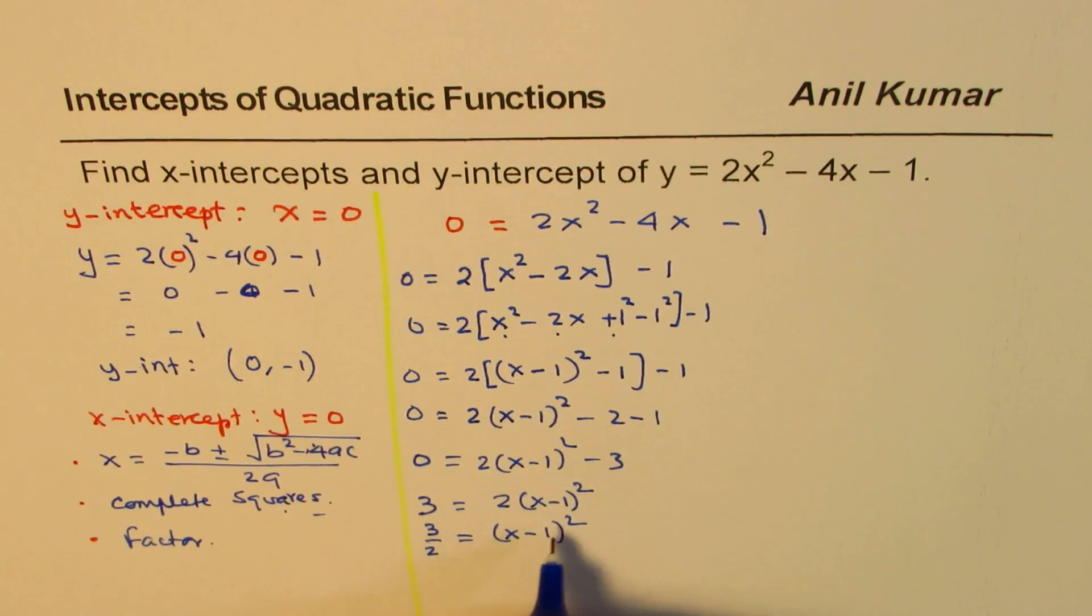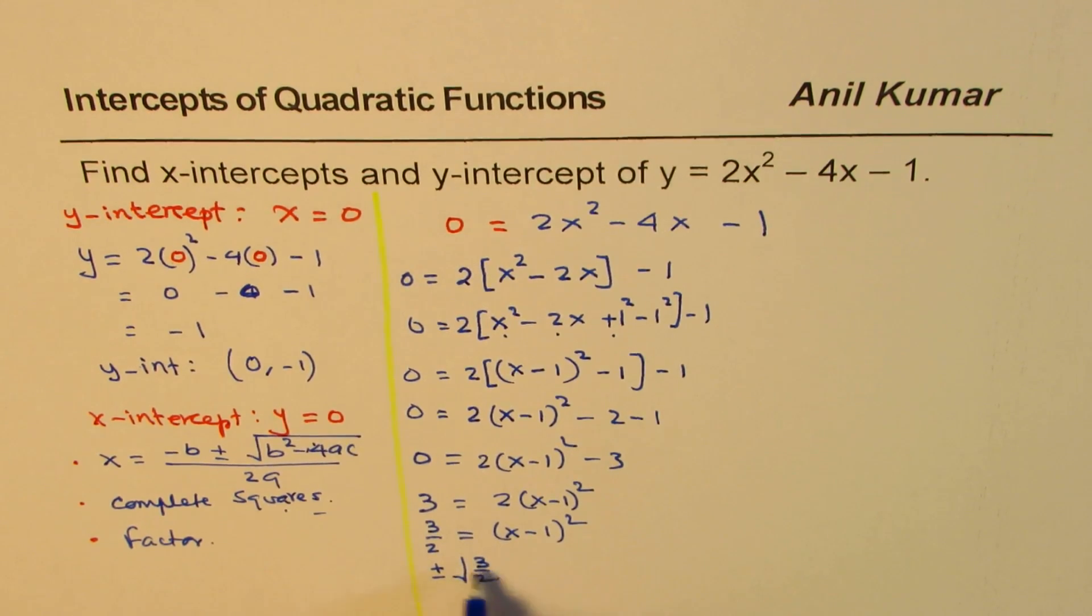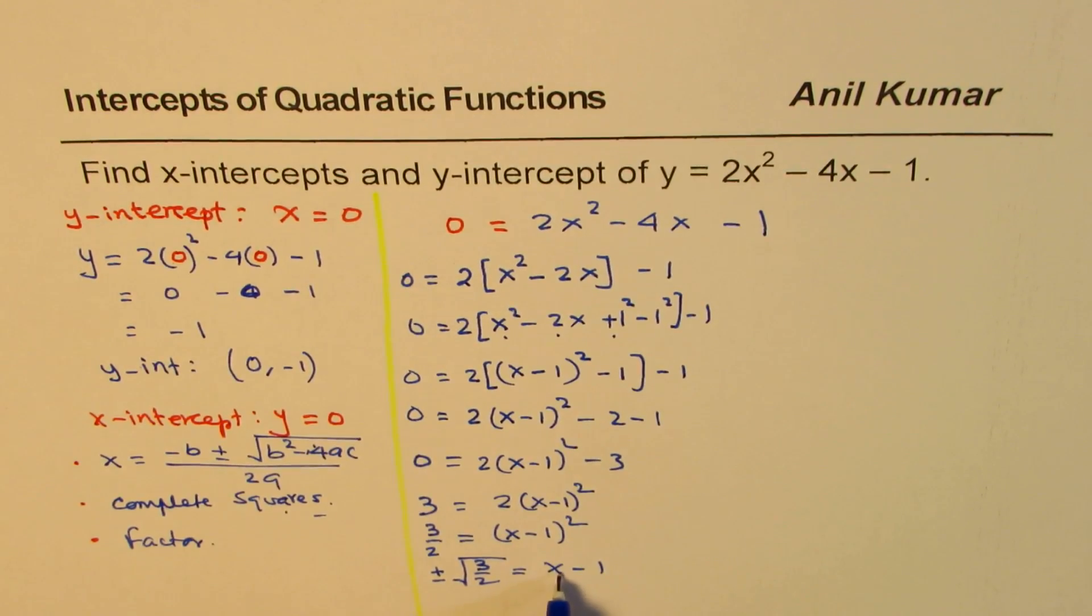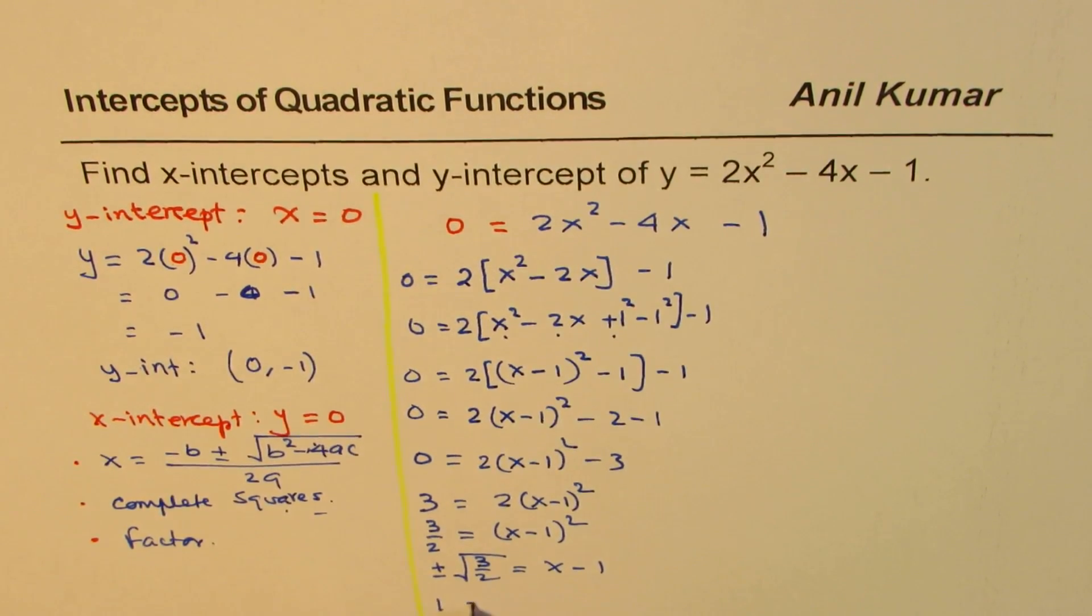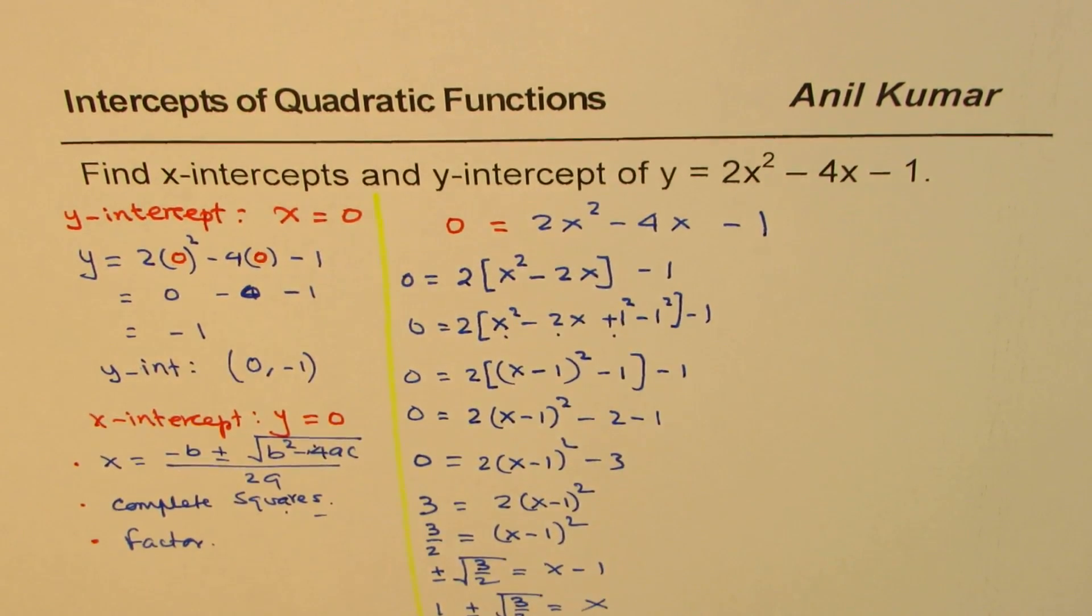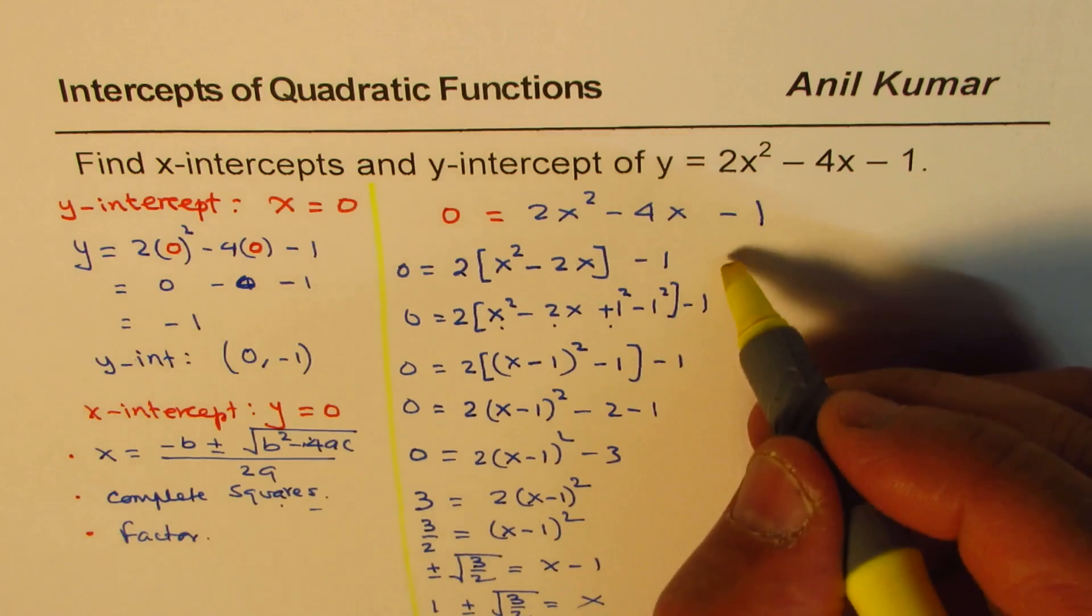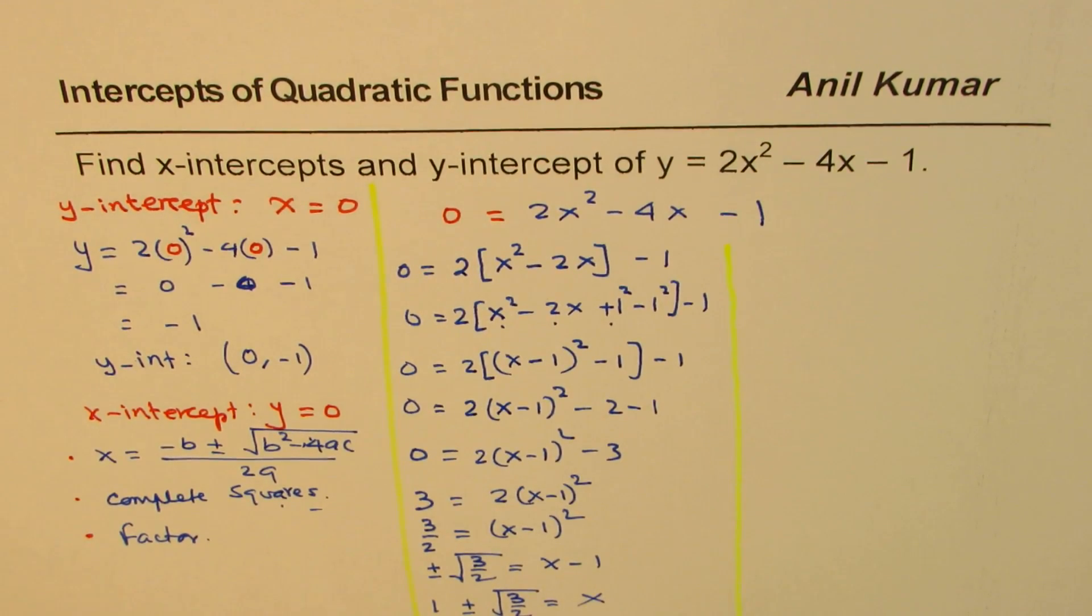Now you square root it. So whenever you square root, you do plus and minus square root of 3 by 2 equals x minus 1. What is x? Bring 1 this side. So 1 plus minus square root of 3 by 2 is equals to x. So what you get here is you get these two as your x-intercepts.